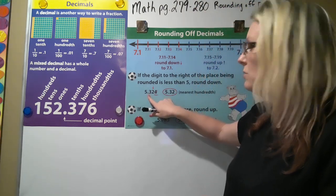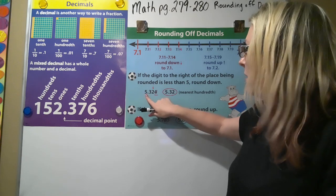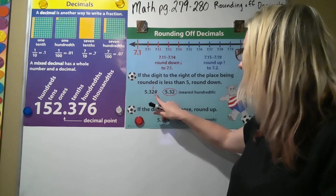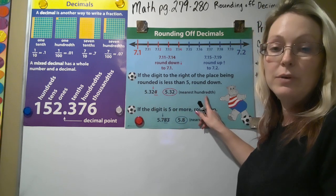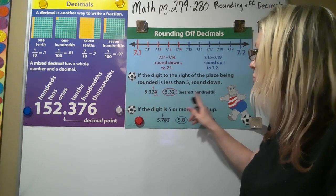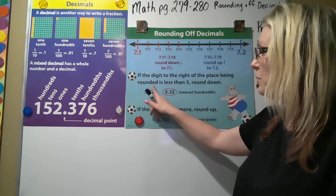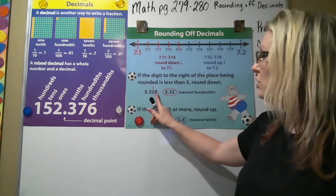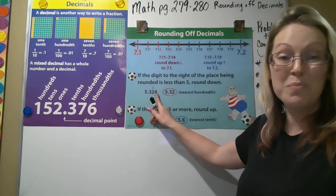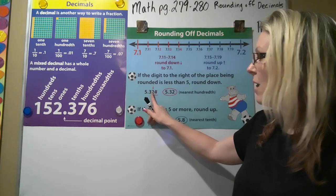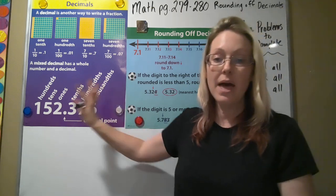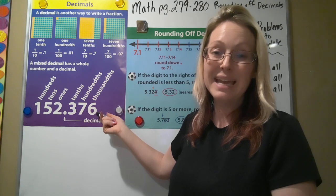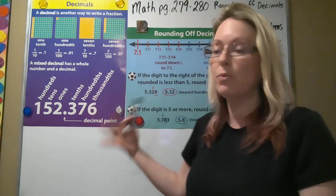For instance, if we use this number right here, we have 5.324. If I said you need to round to the nearest hundredth, you're going to look at which one is the hundredths place. Remember, we see that number, and then we use the next number, the determining digit, to round that number. Now let's review really quick what our decimal places are so that it helps you when it says which one to round to.